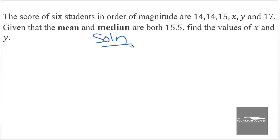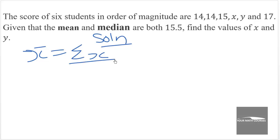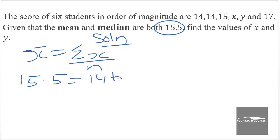The second question: the scores of six students in order of magnitude are 14, 14, 15, X, Y, and 17. Given that the mean and median are both 15.5, find the values of X and Y. If the mean is 15.5, recall that the mean equals the total sum over the number of items. So 15.5 equals 14 plus 14 plus 15 plus X plus Y plus 17, all over 6.